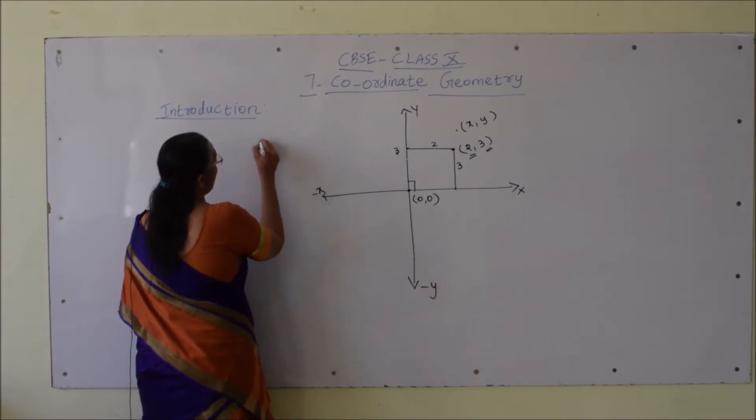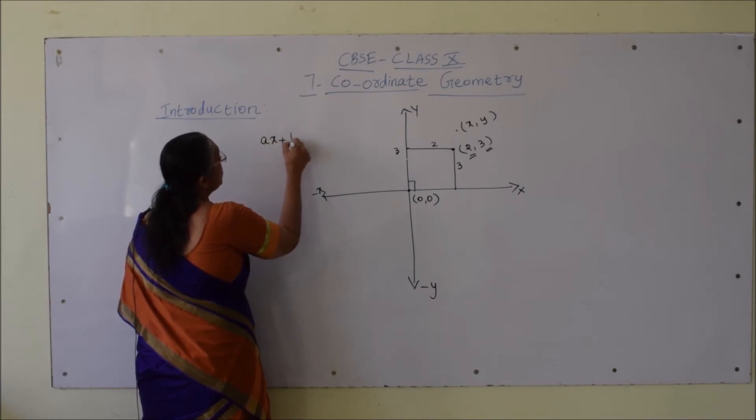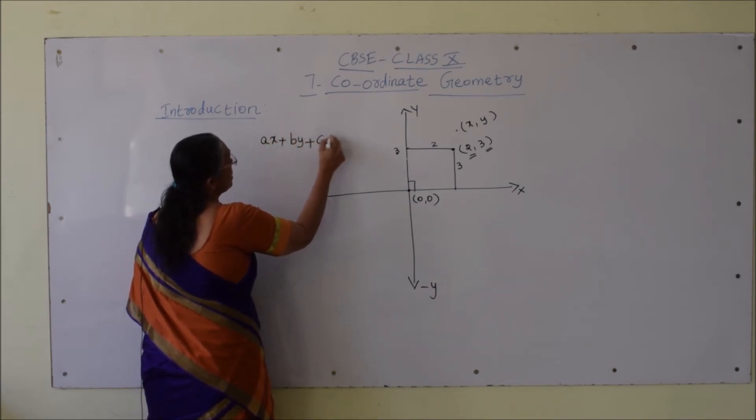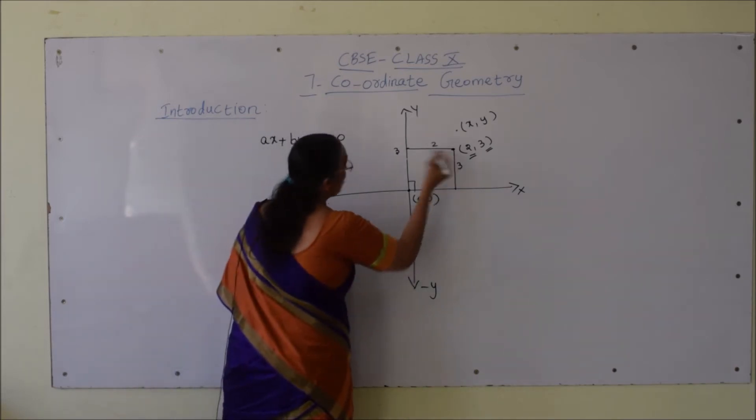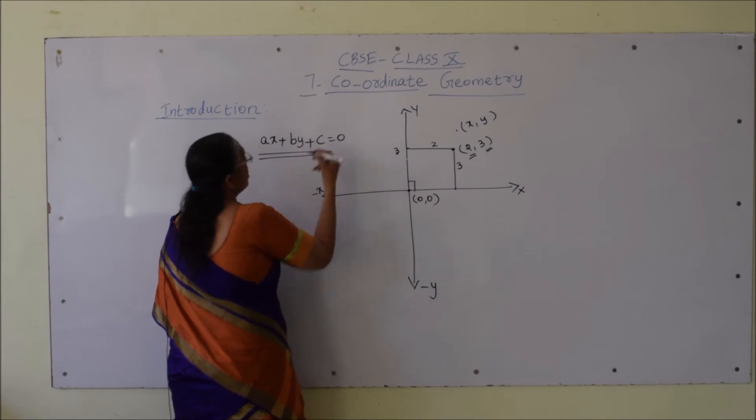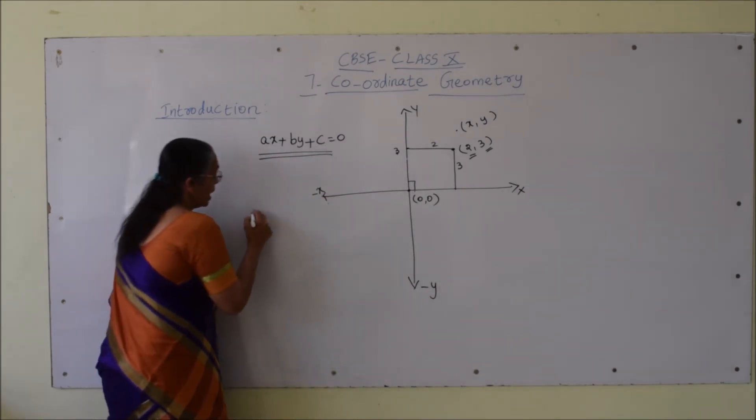The graph of a linear equation in two variables, ax + by + c = 0, in the coordinate system represents a straight line.